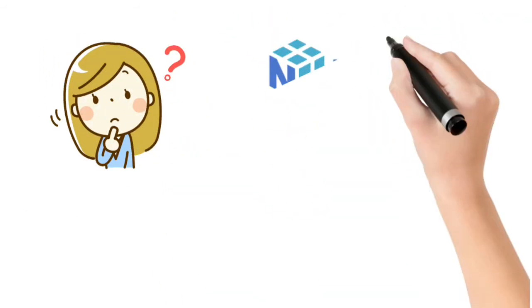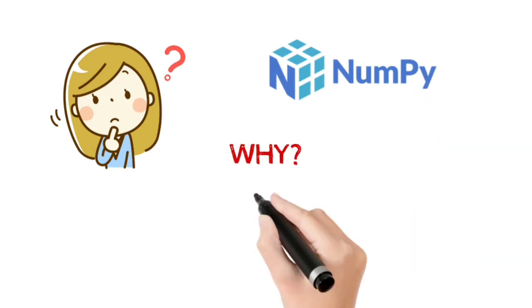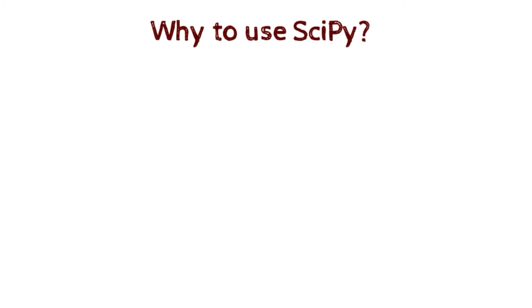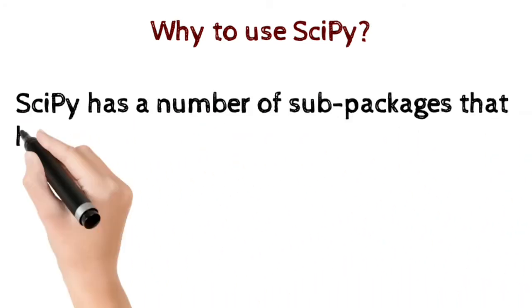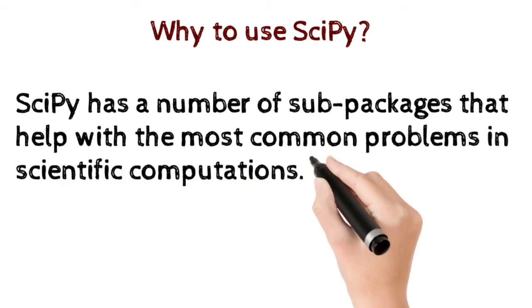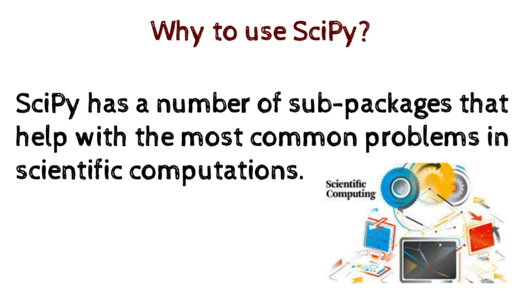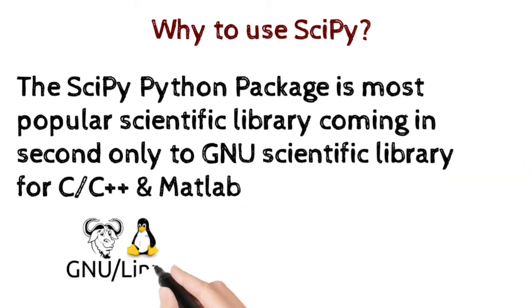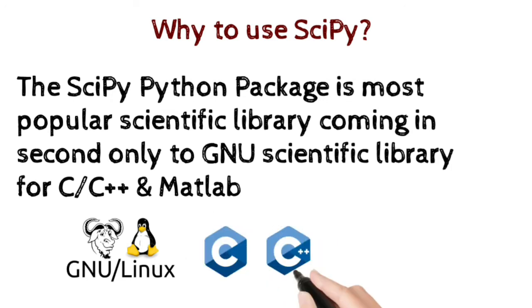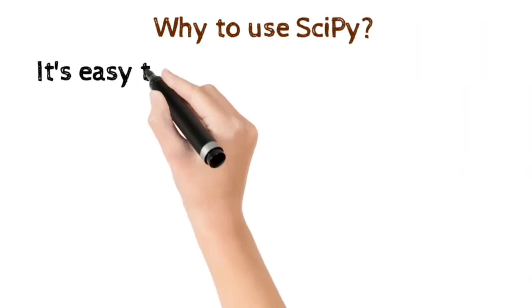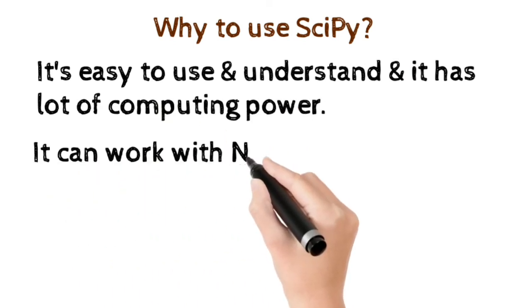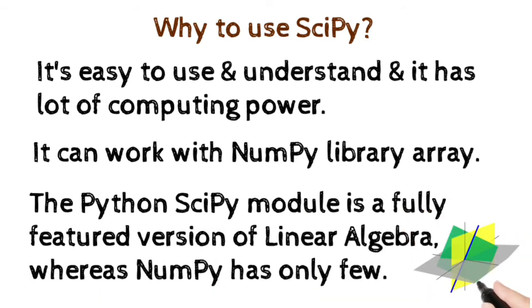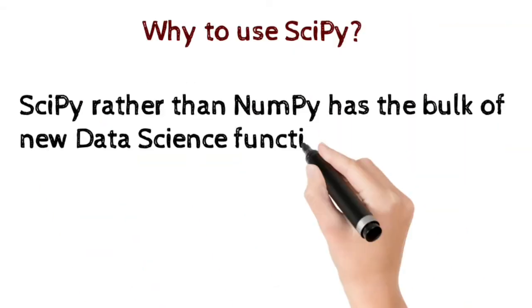Now you might think: we already have NumPy, and SciPy is also built on NumPy, so why do we need to learn SciPy? SciPy has a number of sub-packages that help with the most common problems in scientific computations. The SciPy Python package is the most popular scientific library, coming in second only to the GNU scientific library for C, C++, and MATLAB. It's easy to understand and has a lot of computing power. It can work with NumPy library arrays. Python's SciPy module is a full-featured version of linear algebra, whereas NumPy has only a few. SciPy, rather than NumPy, has the bulk of new data science functionalities.